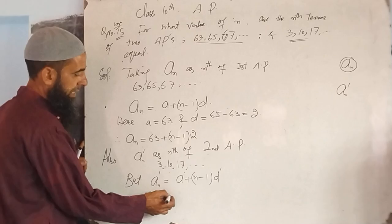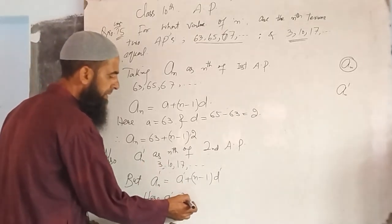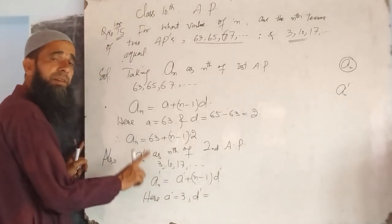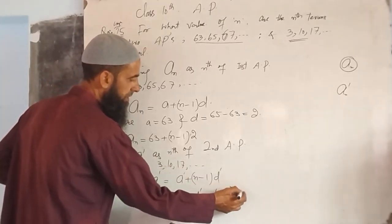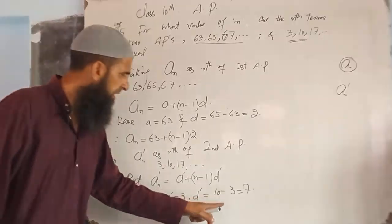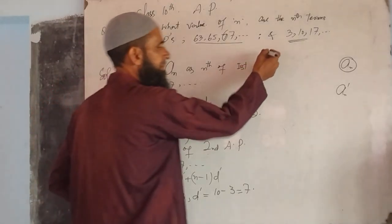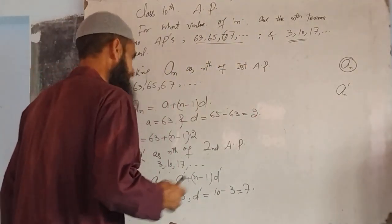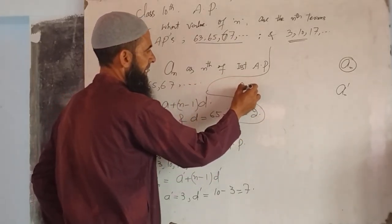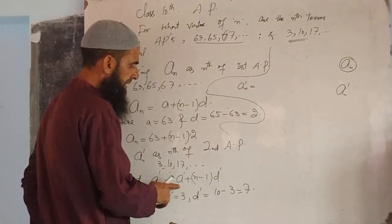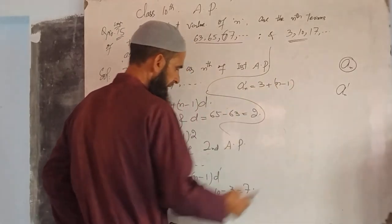Here A dash is equal to first term, that is 3. Common D dash is equal to difference of any two consecutive terms. We take second minus first: 10 minus 3, that is 7. Using these values of A dash and D dash, we get: A'n is equal to 3 plus n minus 1 into 7.